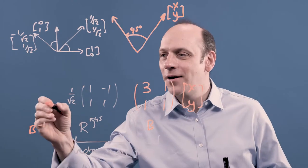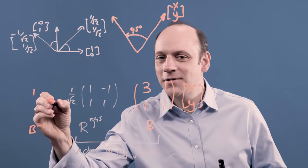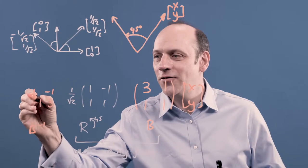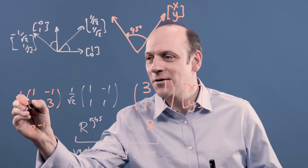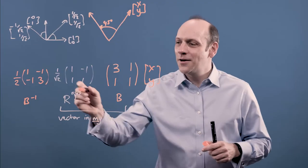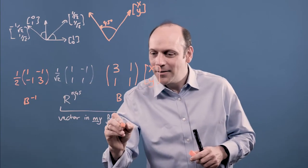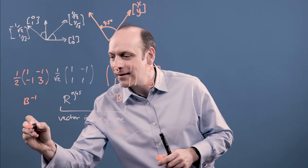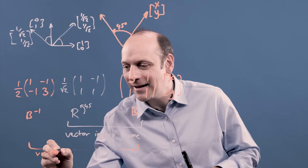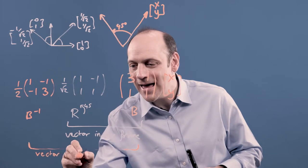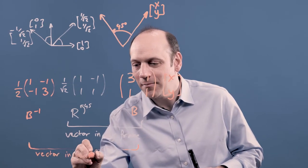And B to the minus 1, I get by flipping the terms on the leading diagonal, taking minus the off diagonal terms and dividing by the determinant here, which is 2. So I multiply by a half. So that then gives me the vector back in Bear's frame.